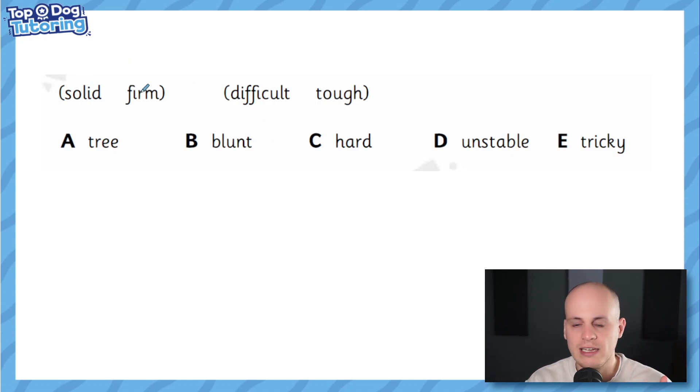For example, look at this one, solid and firm, that means like hard, right? Something hard or tough. Whereas difficult and tough, I've used the same word there, difficult and tough means tricky. So even looking at these answers, we've got the idea that tricky or hard might mean this one right here but what we've got to do is find the one word of the five options that is a homophone which means it has more than one meaning and therefore can mean both of these groups of words or go with both of these groups of words.